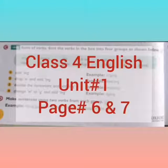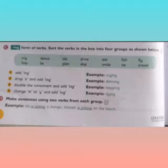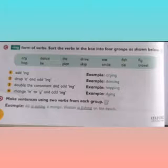Welcome to the English lecture video class. For today we are going to do page number six and seven of unit number one. We have done page six yesterday, but we have left one exercise here, which is exercise number D. Your exercise is to make sentences using two verbs from each group.